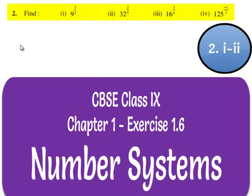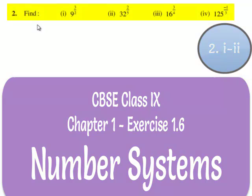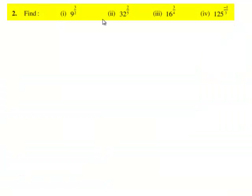Now let us move on to the second question of the exercise. The second question is: find 9 raised to the power of 3 by 2, 32 raised to the power of 2 by 5, 16 raised to the power of 3 by 4, and 125 raised to the power of minus 1 by 3.